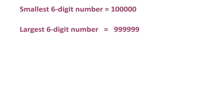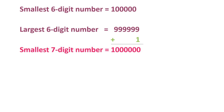Until the last class you have studied till six digit numbers. The smallest six digit number is one lakh and the largest six digit number is 9,99,999. When we add one to the largest six digit number we get the smallest seven digit number.